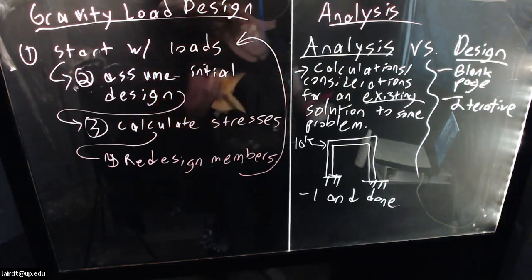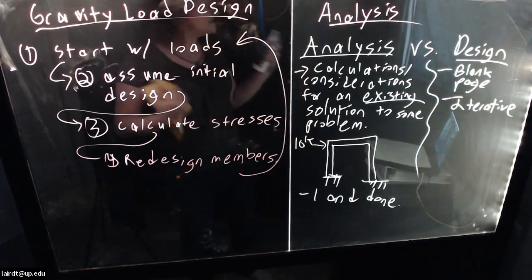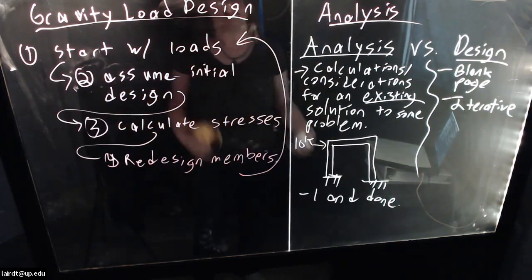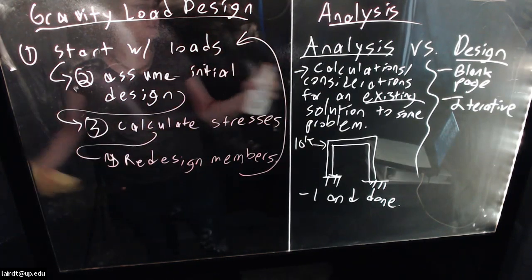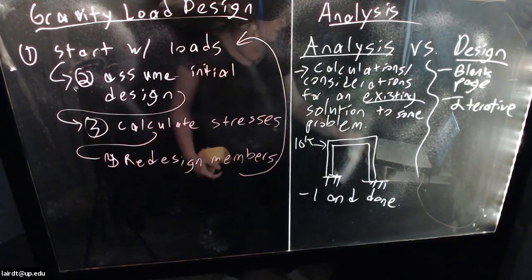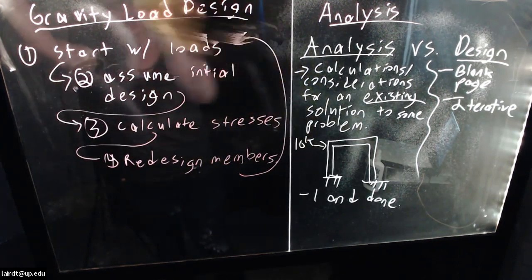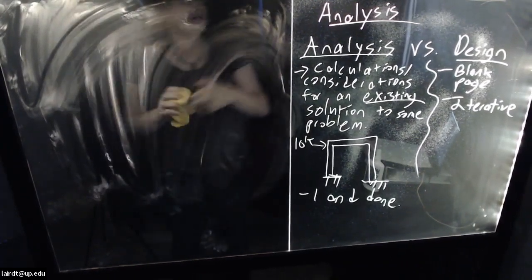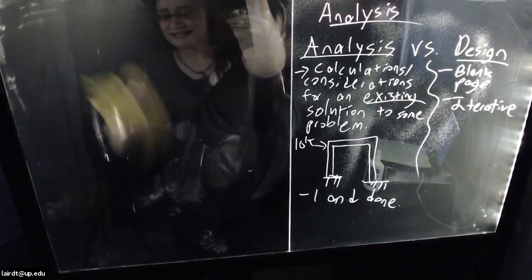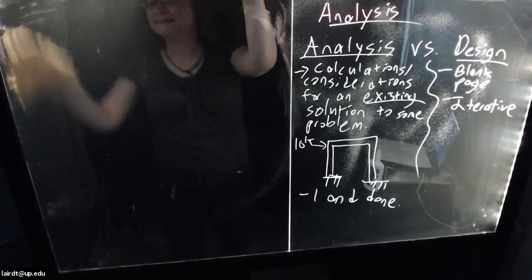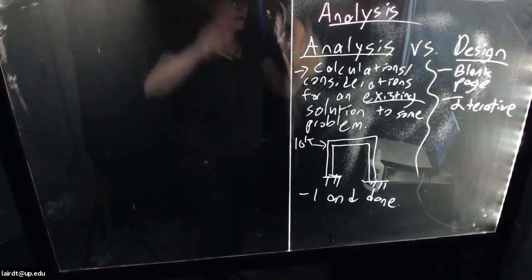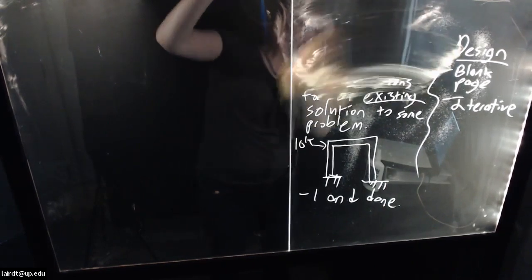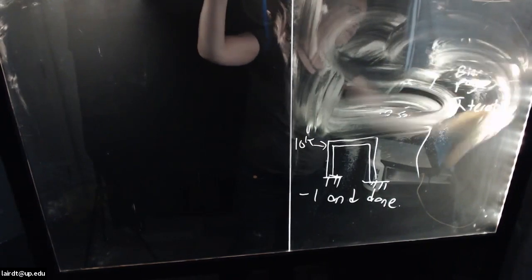That really is the fundamental difference between analysis and design. Analysis is a simple once-and-done pass-through process. Design is more of an iterative process that allows you to create something from a blank page. We've now defined the most basic terms of this class. Even if you hadn't taken any civil engineering courses, you could probably give some basic definition for each of these, especially structure.